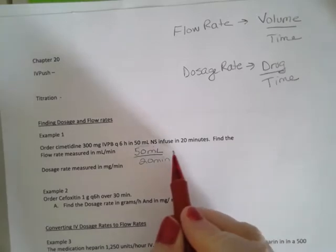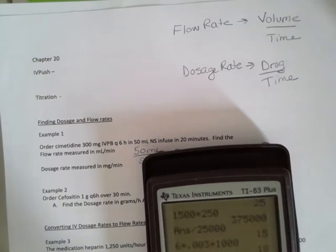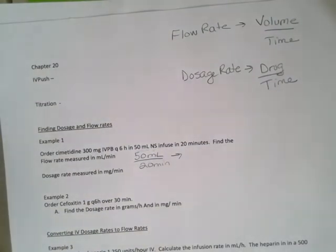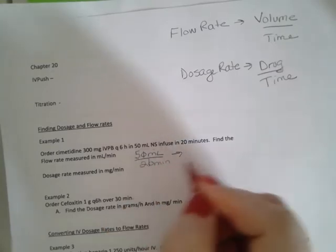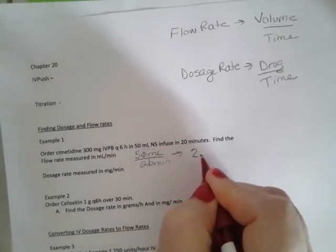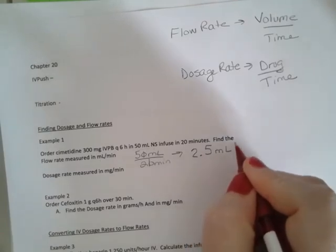When we do that division, 50 divided by 20, we can cancel out the zeros. Five divided by two is two and a half or 2.5 milliliters per minute.